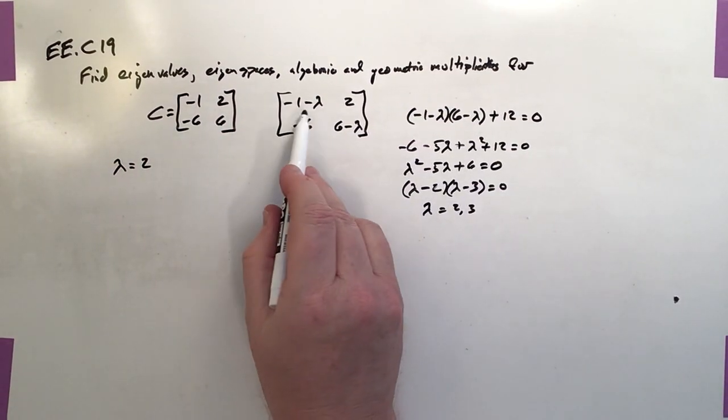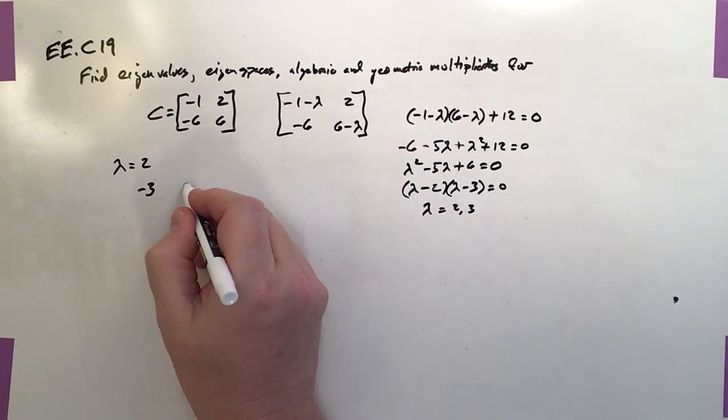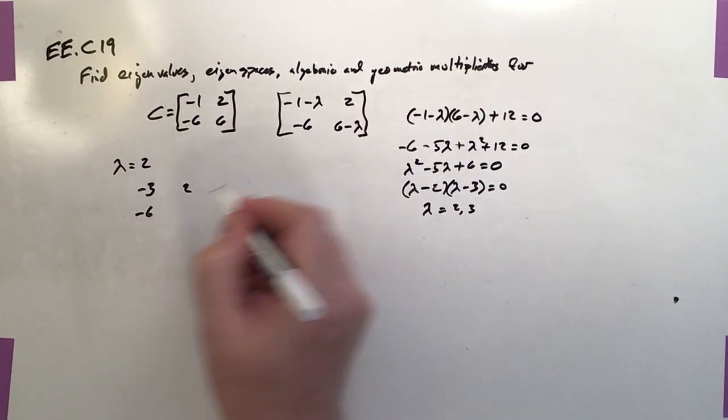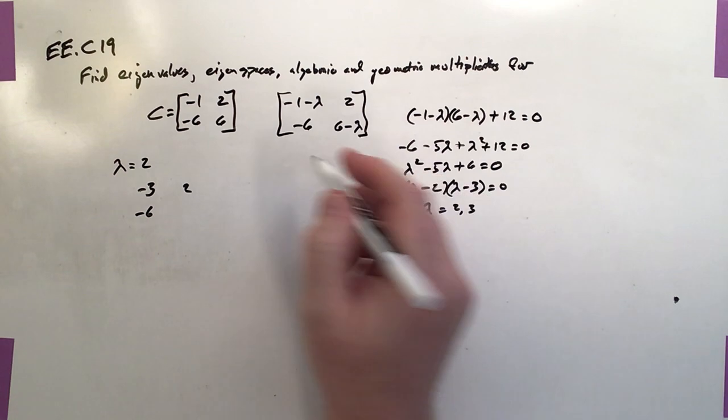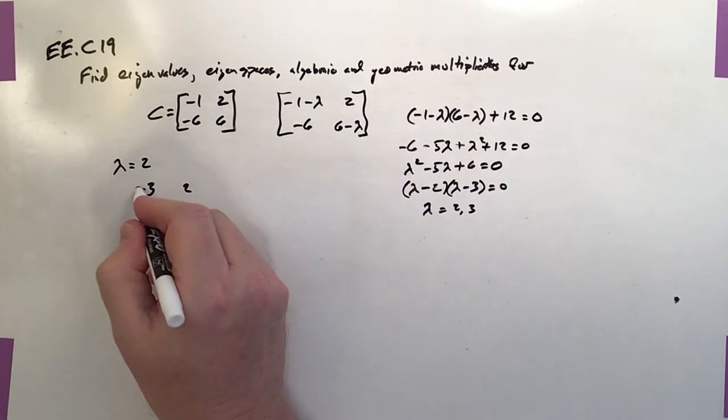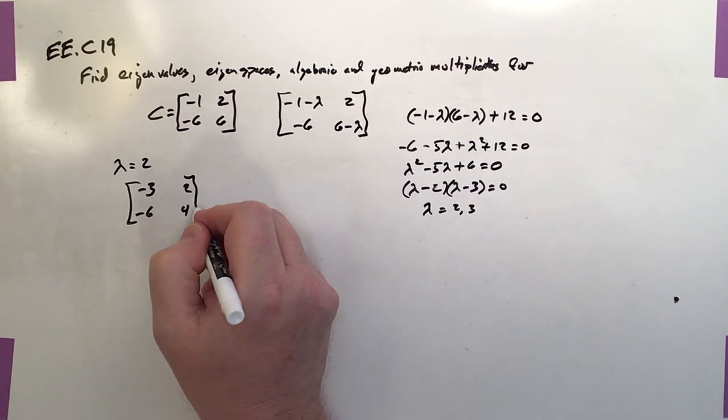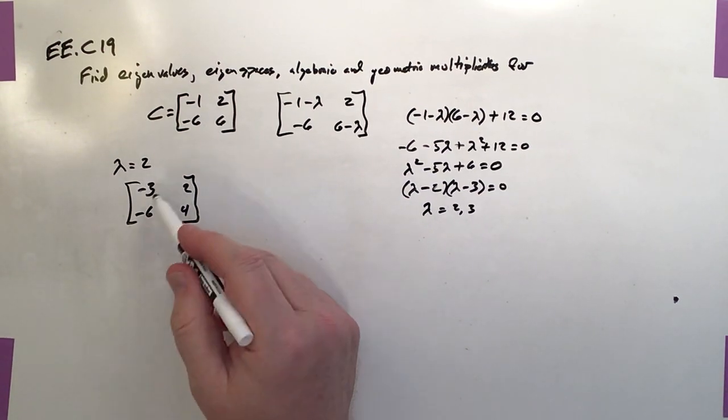When lambda equals 2, negative 1 minus 2 is negative 3, 2, negative 6, and 6 minus 2 is 4. So here is the augmented matrix when lambda is equal to 2.